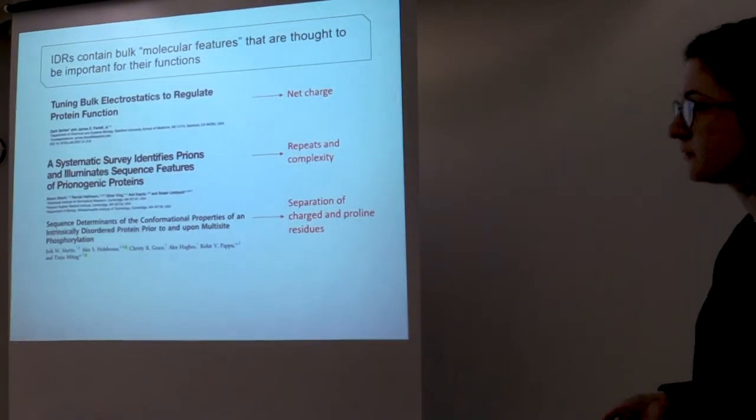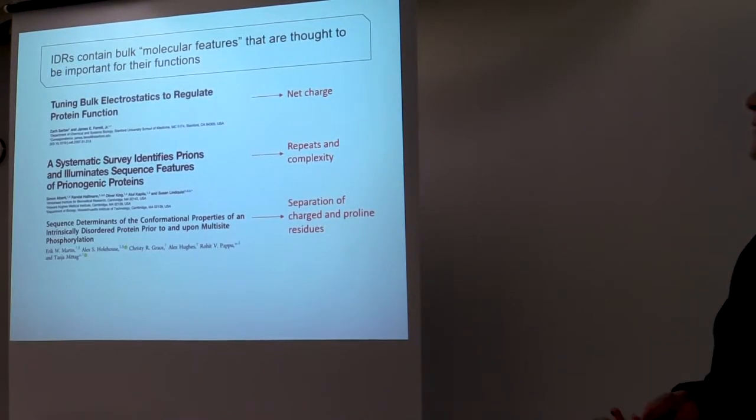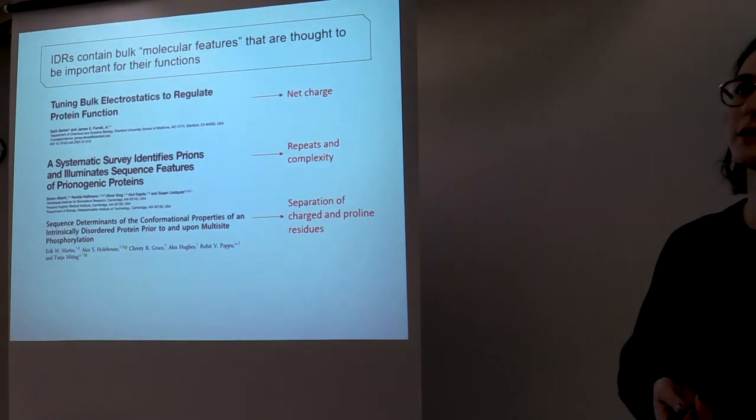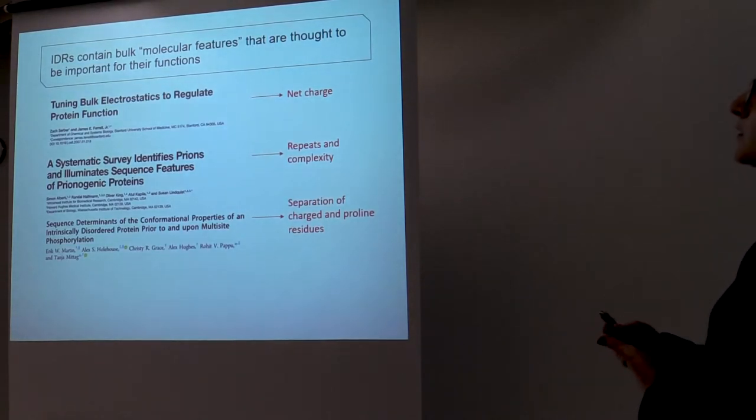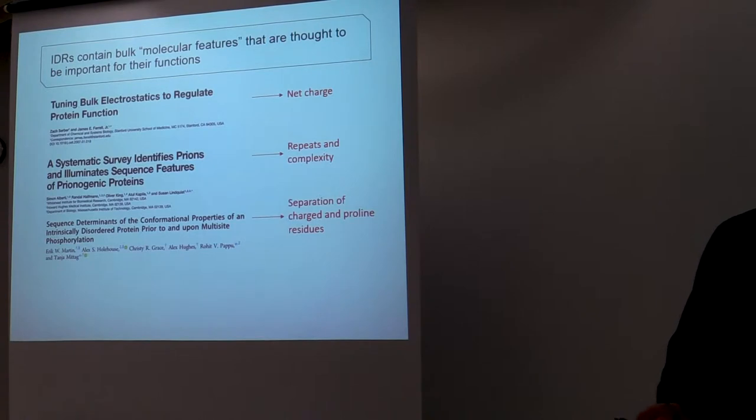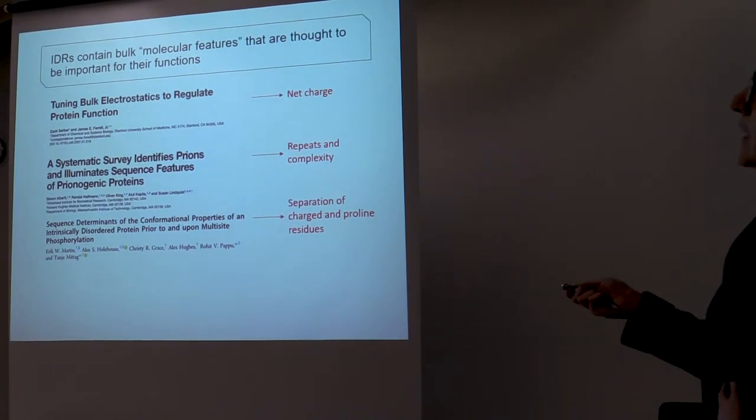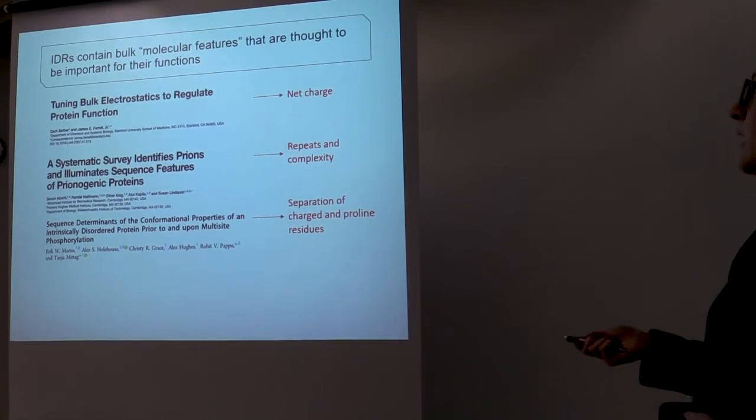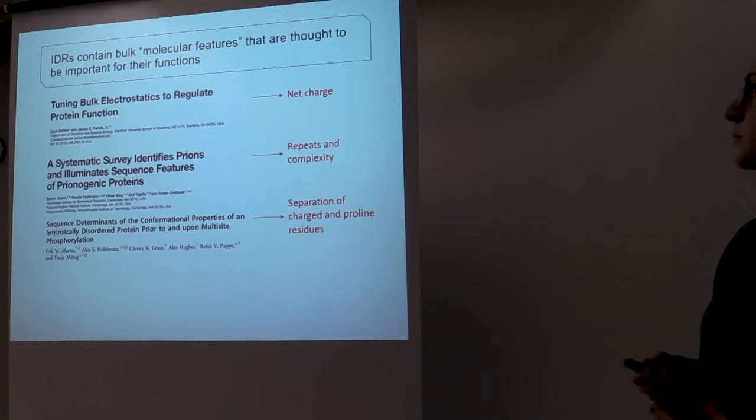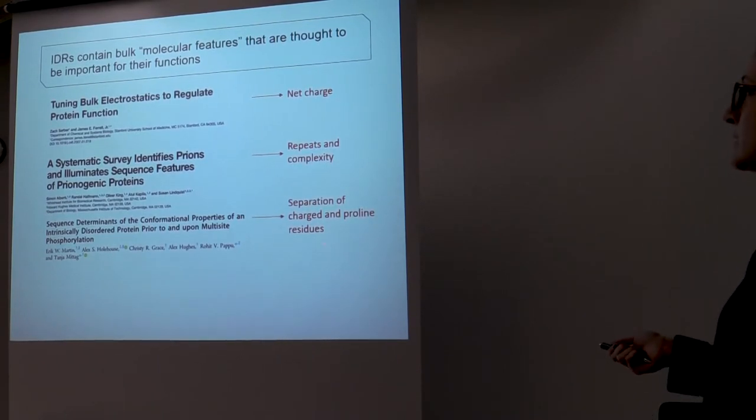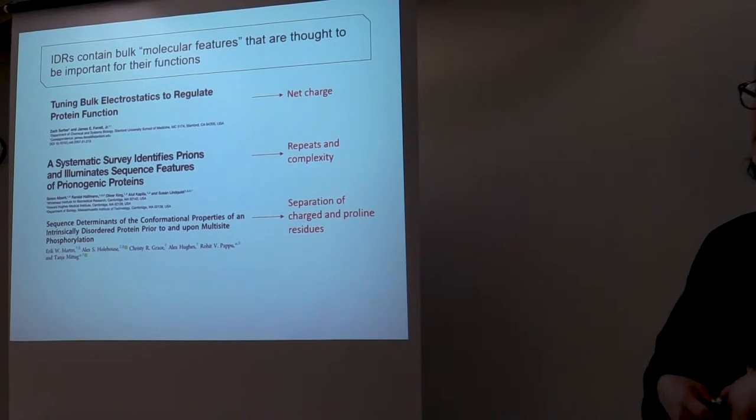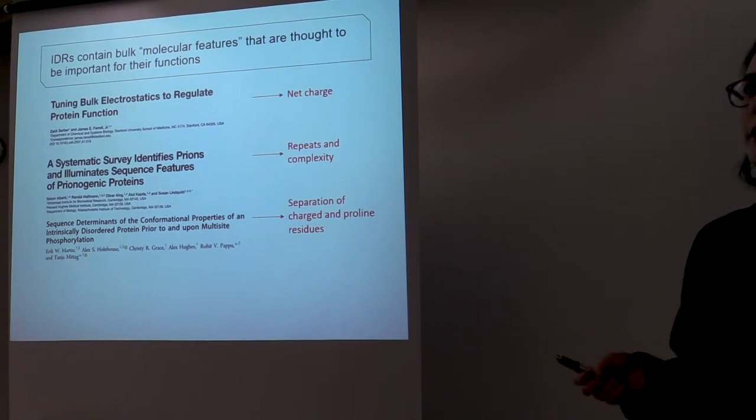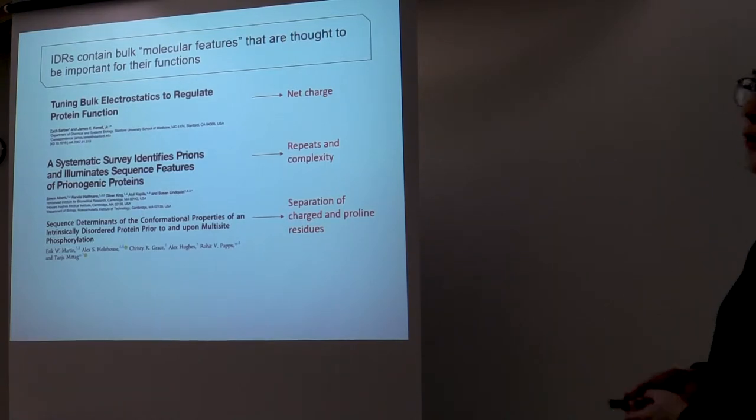And one thing that's come to light in the last decade or so is that these disordered regions can contain these molecular features, which are higher order features in their sequences that have been associated with different functions. So some examples of these are things like net charge of the disordered region, different types of repeats or general complexity, and things like the separation of charged and proline residues versus the rest of the sequence.